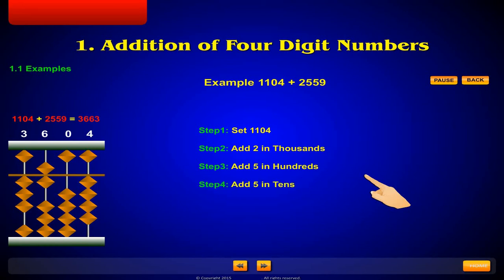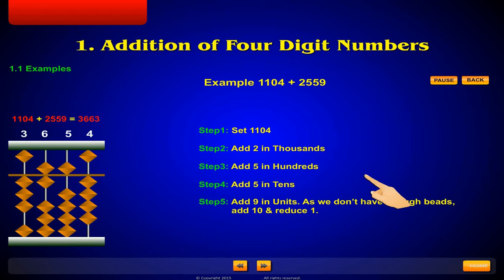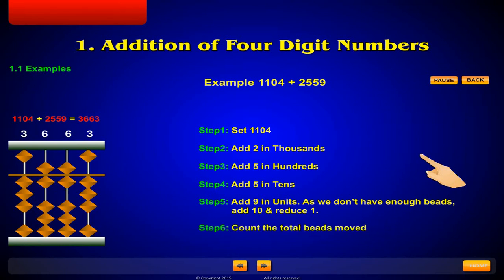Step 4: Add 5 in tens. Step 5: Add 9 in units. As we don't have enough beads, add 10 and reduce 1. Step 6: Count the total beads moved.